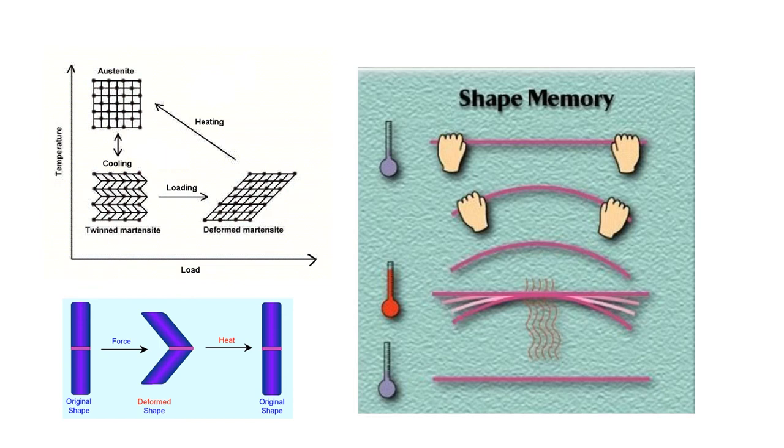Here is shown how the shape memory alloys work. The shape memory effect occurs due to the change in the crystalline structure of materials. The two important phases in these materials are martensite, which is a low temperature phase and relatively weak, and austenite, which is high temperature phase and relatively strong.